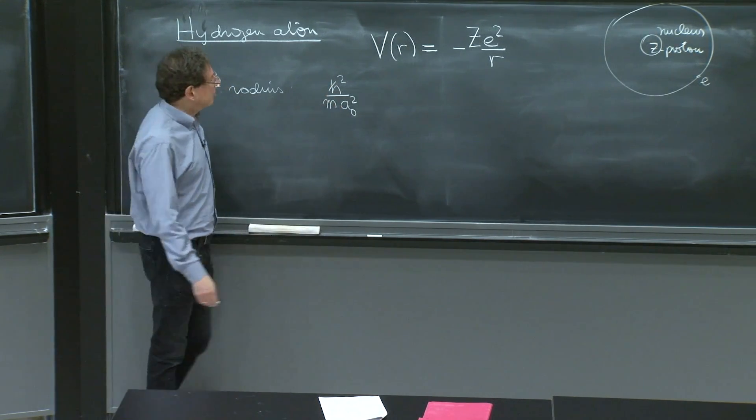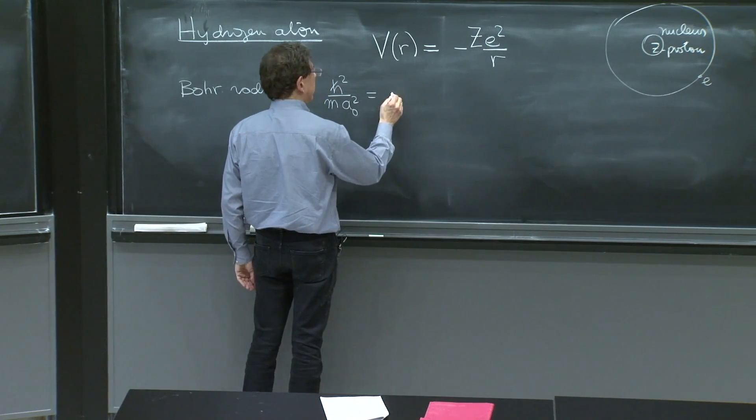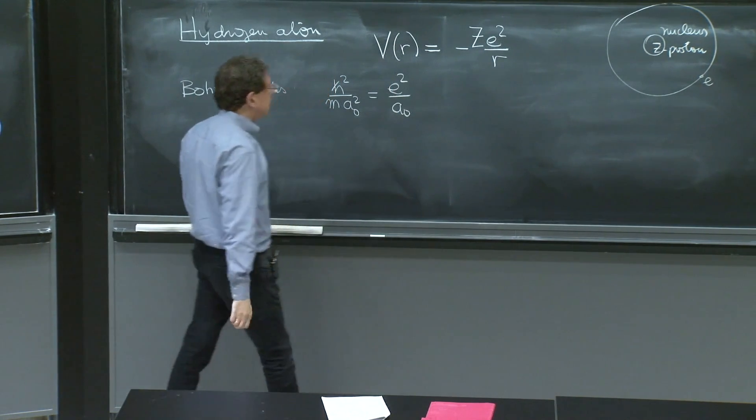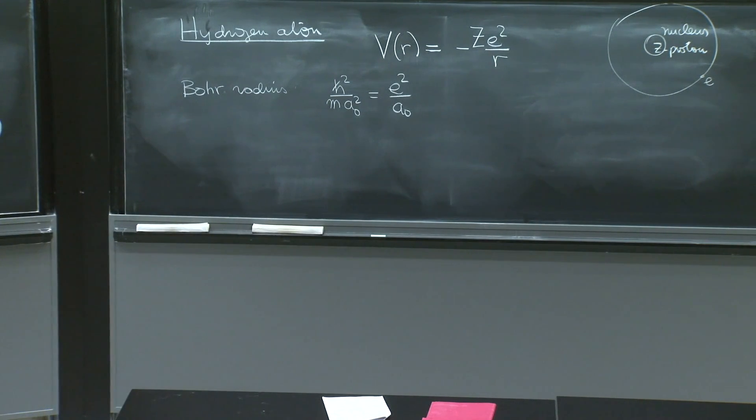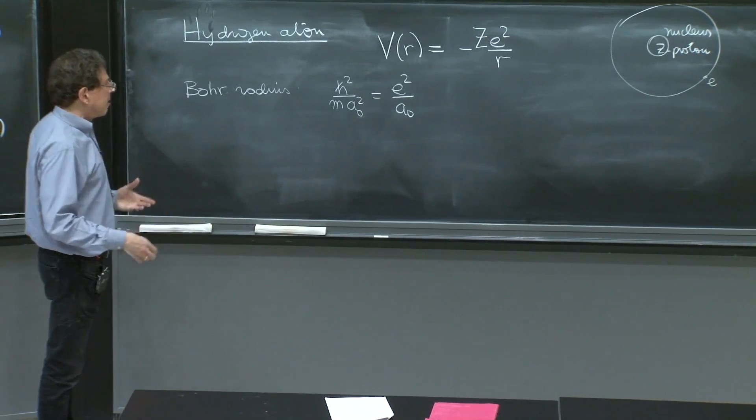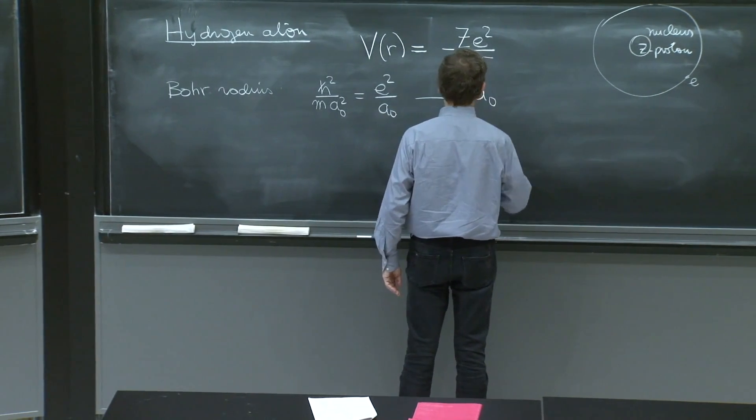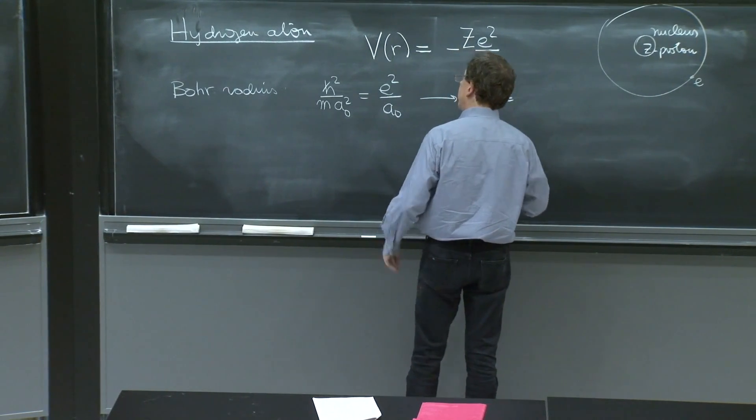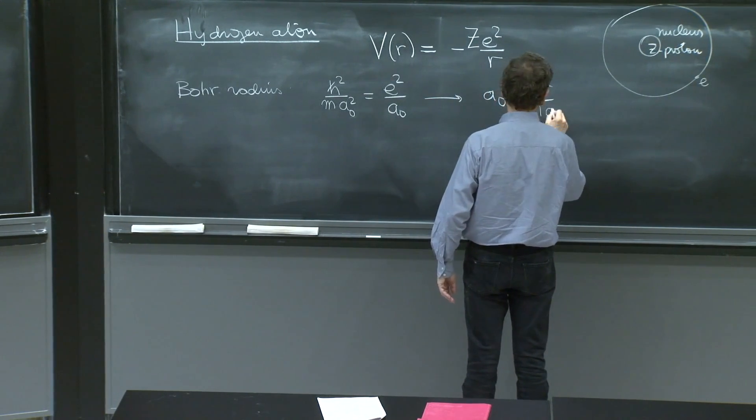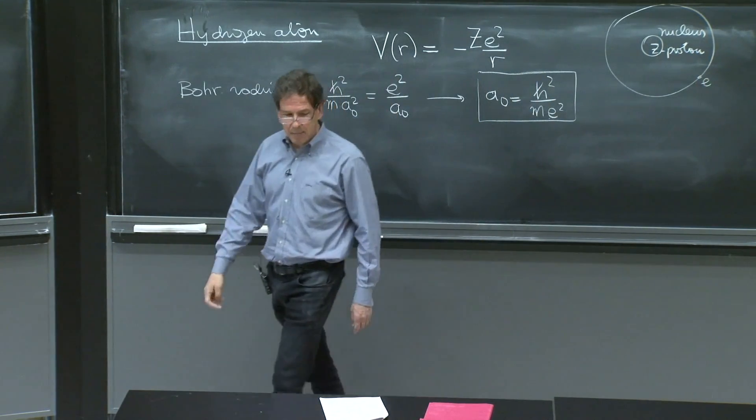But a potential has units of energy. And we just put e squared over a0. So this is a consistent equation between two quantities that have units of energy, from which you can get the unique length, which is a0. And a0 is h squared over m e squared. It's a very simple and nice constant. It's the Bohr radius.